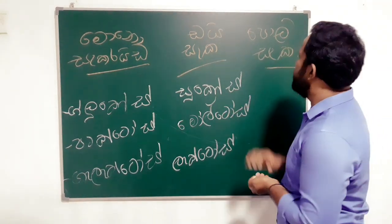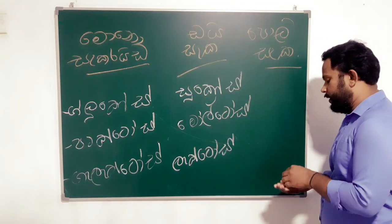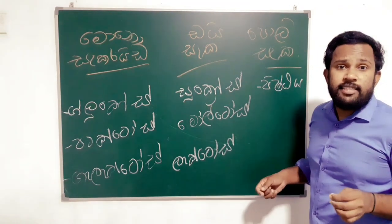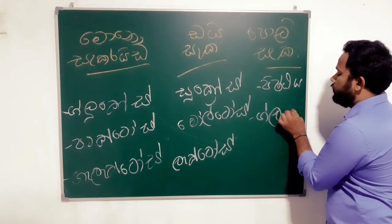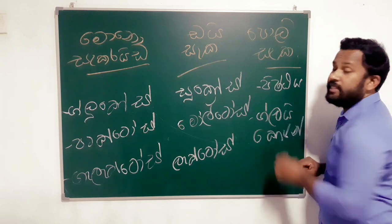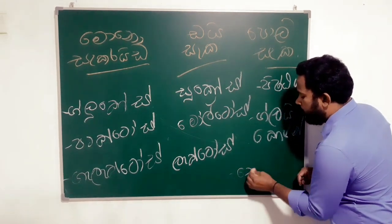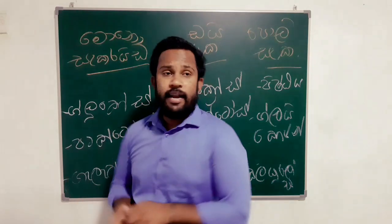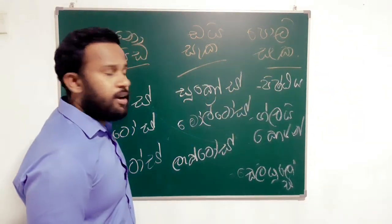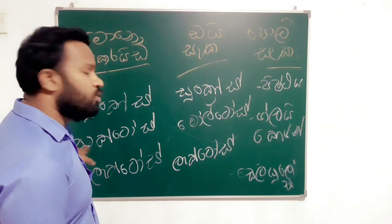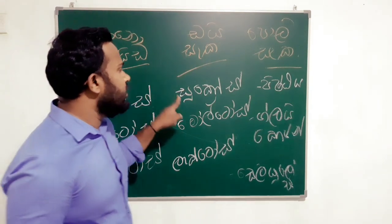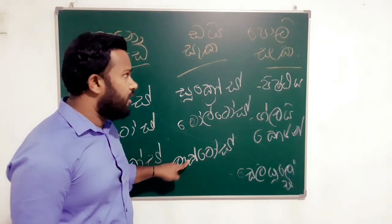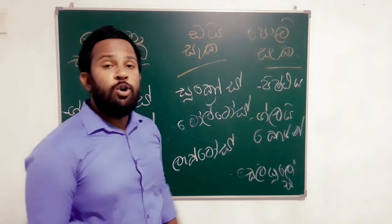This is polysaccharide. This is glycogen. This is polysaccharide — glycogen. We are using polysaccharide. The disaccharide examples are sucrose, maltose, and lactose. Polysaccharide includes glycogen, cellulose.